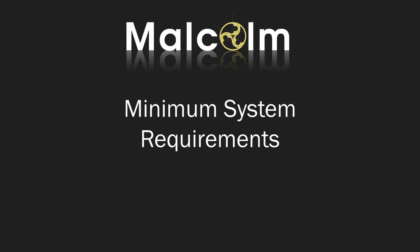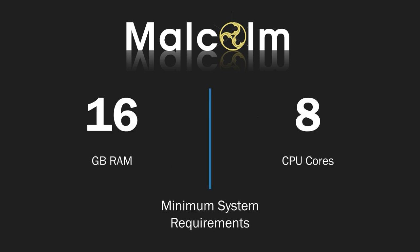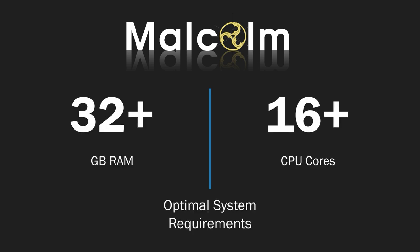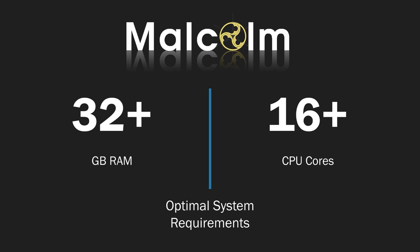Before we start, a quick note on minimum system requirements. If you try to install Malcolm without adequate resources, it will run poorly or crash the machine. Malcolm's minimum system requirements are 16GB of RAM and 8 CPU cores. However, for an optimal experience, it is recommended to install Malcolm on a system with 32GB or more of RAM and 16 or more CPU cores.